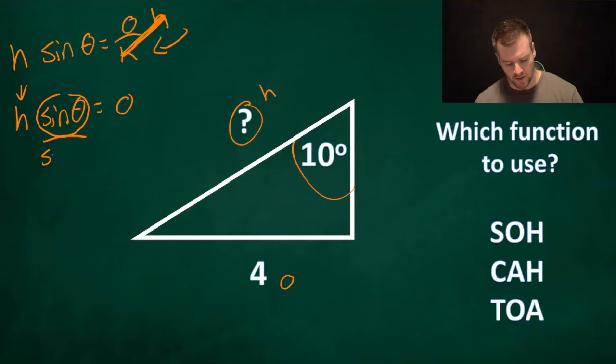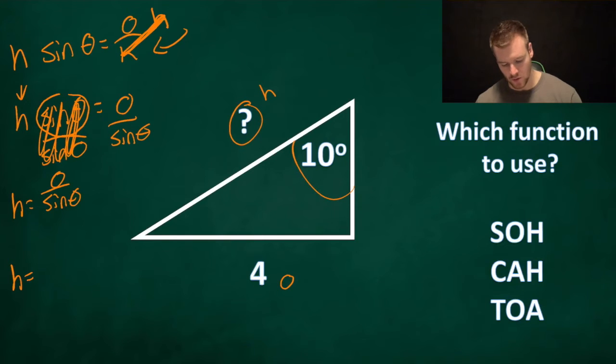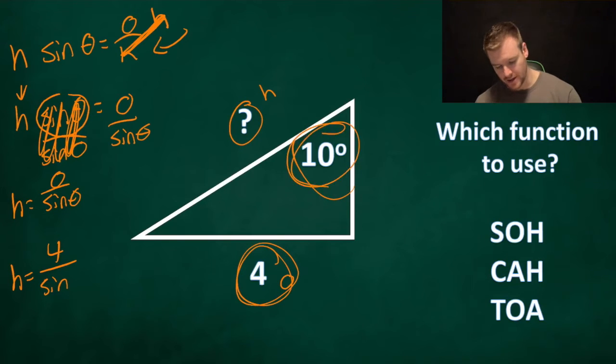Now I want to get that h by itself now that it's out of the bottom, which is good. So I'm going to move this whole sine θ to the other side. So to cancel that out being multiplied by h, we divide it by sine θ and divide this side by sine θ and this cancels out. So now let's write what we have. We have h is equal to O over sine θ. Let's fill in our values. h is equal to 4 is our opposite over sine. Our angle is 10 degrees.